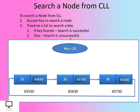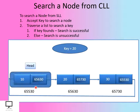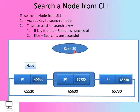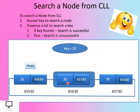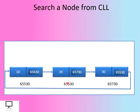To traverse a linked list, we are supposed to start from the head node. Let's start with the head node and compare its information part with the key. They are not equal, so let's move forward. Let's compare the key value with the next node's information part — they are equal, which indicates that my search is successful.